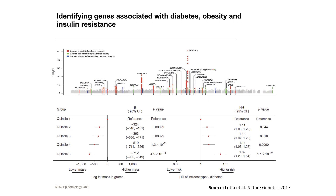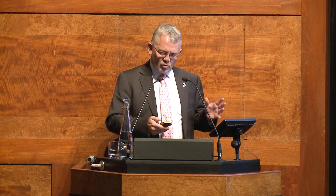If you want to study the interplay between genetics and other risk factors, you first have to identify genetic predisposition. The United Kingdom has been really terrific at working together collaboratively to identify genes for diabetes, obesity, and insulin resistance — a combination of collaborative working, the use of modern technology, and the application of that technology at scale.